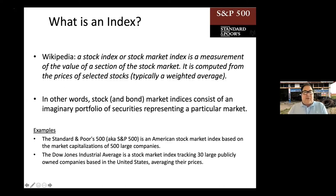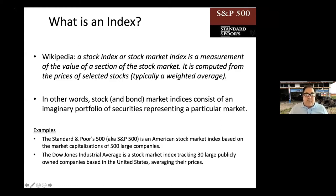The Dow Jones Industrial Average tracks approximately 30 large publicly owned companies with a different set of criteria, sampling across various sub-industries — a little bit of technology, a little bit of this, a little bit of that. The index most faithful to the total stock market is probably the S&P 500 or a similar index.